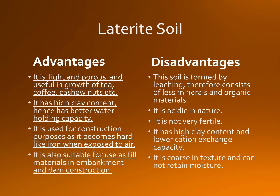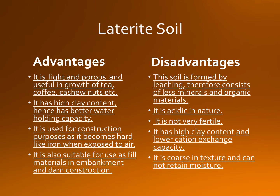Coming to the disadvantages: This soil is formed by leaching and therefore consists of less minerals and organic materials. It is acidic in nature and not very fertile. It has high clay content and lower cation exchange capacity. Cation exchange capacity is a useful indicator of soil fertility as it shows the soil's ability to supply three important plant nutrients: calcium, magnesium and potassium. It is coarse in texture and cannot retain moisture.